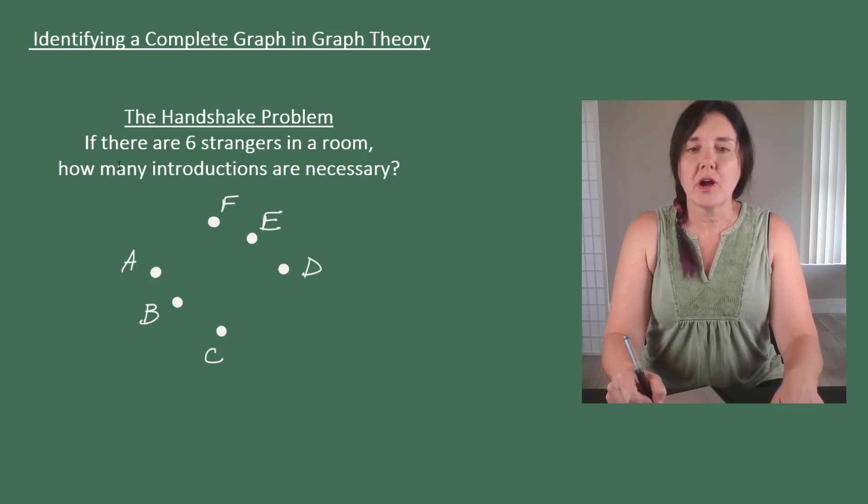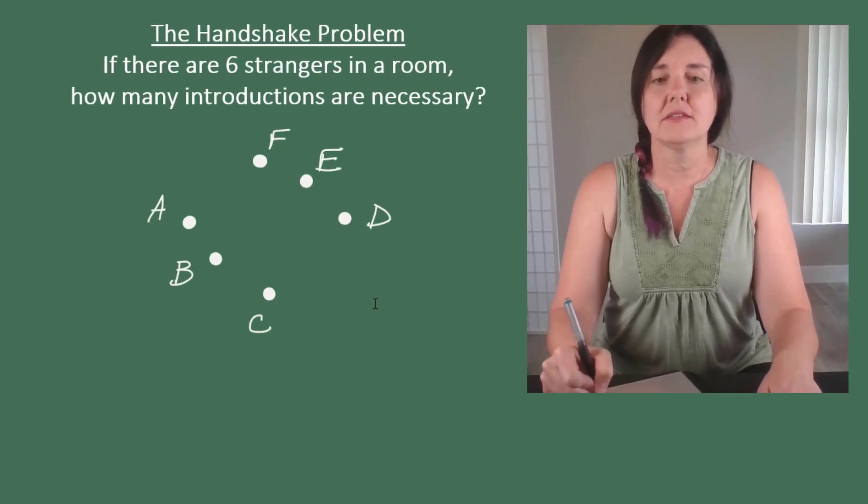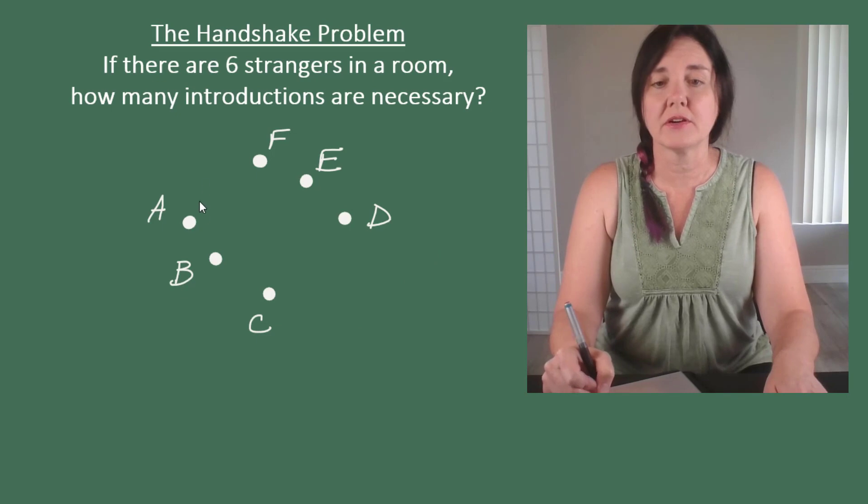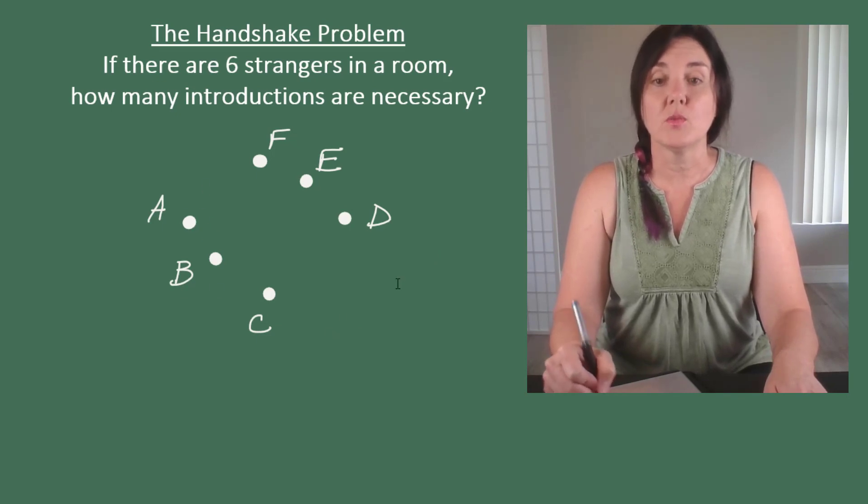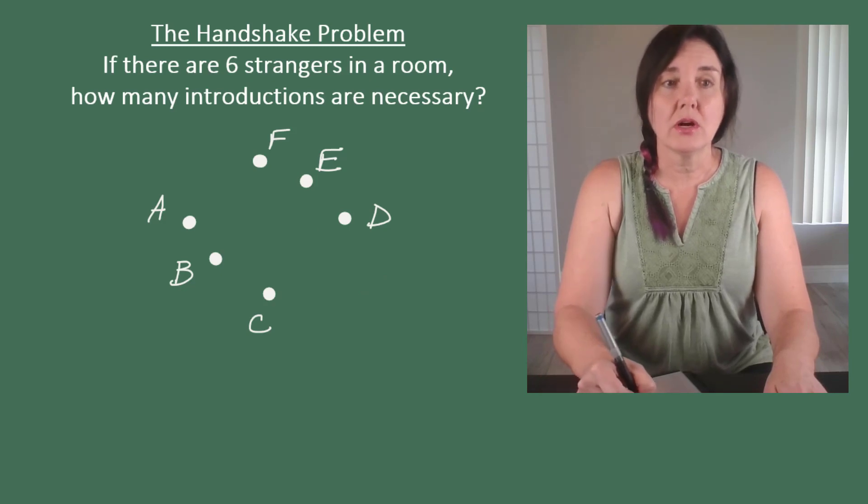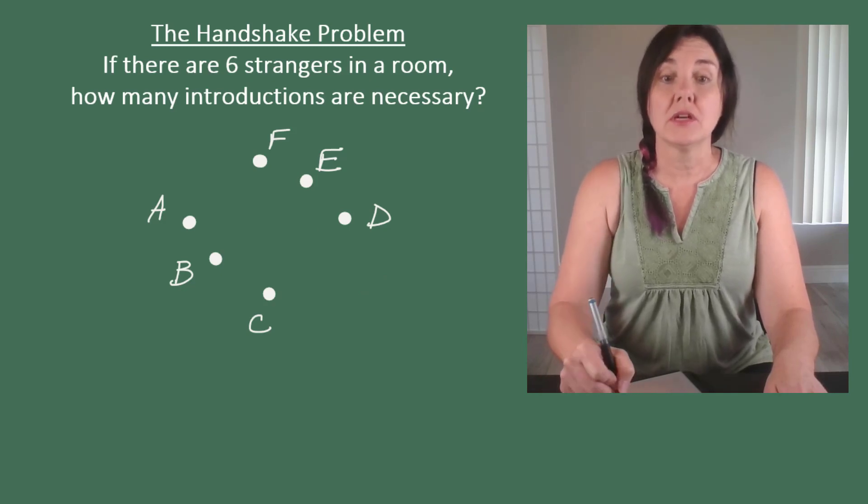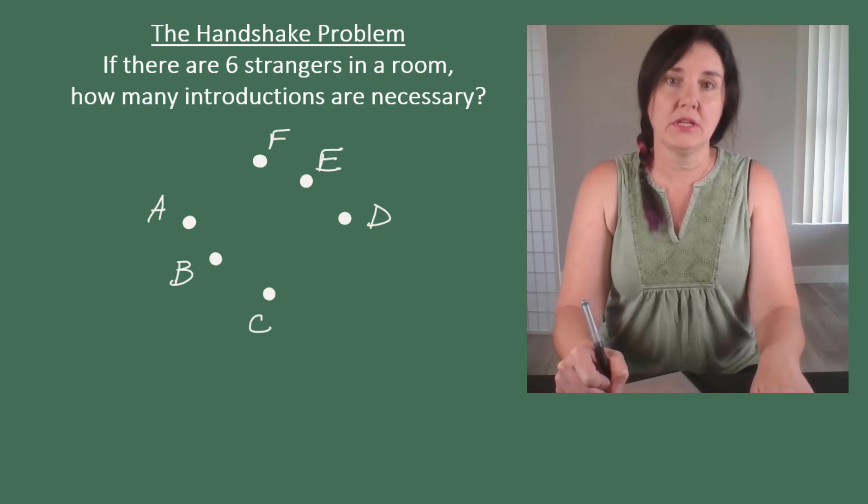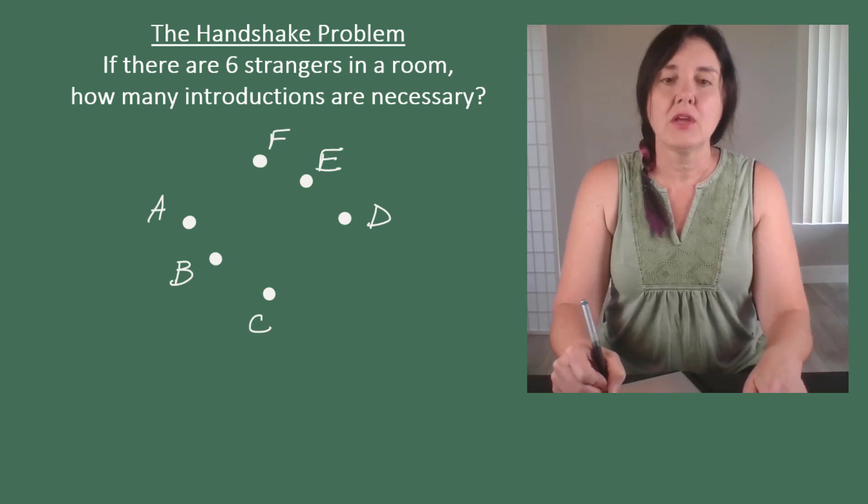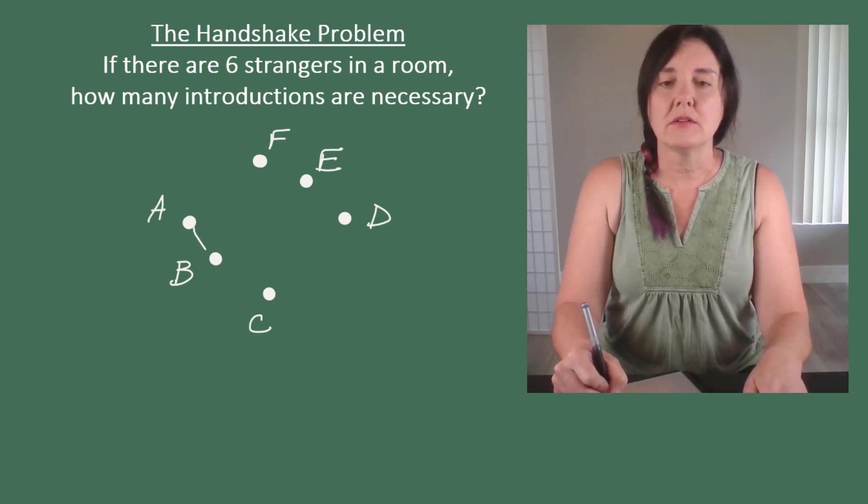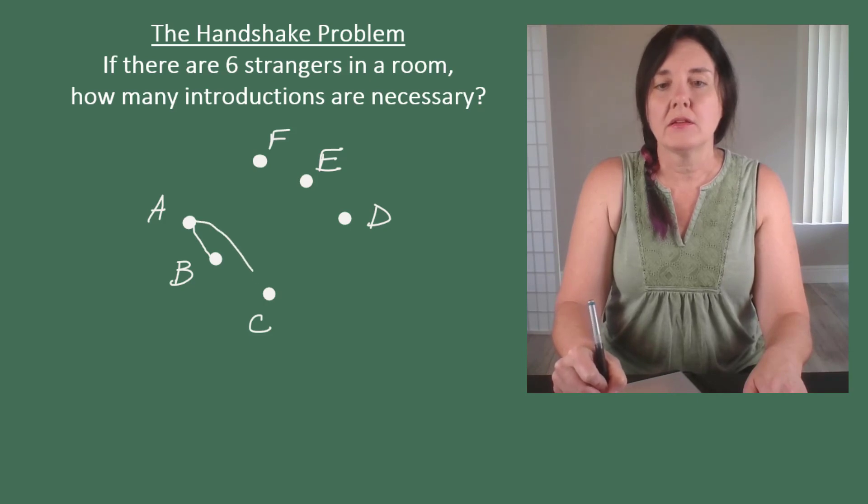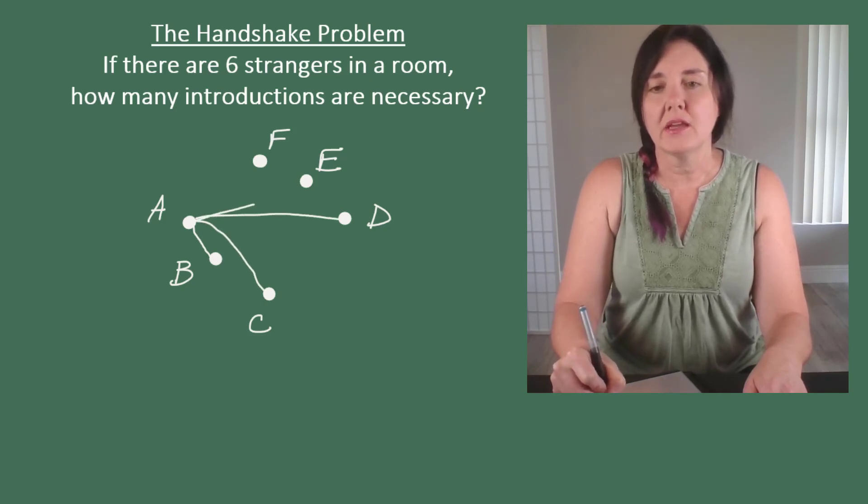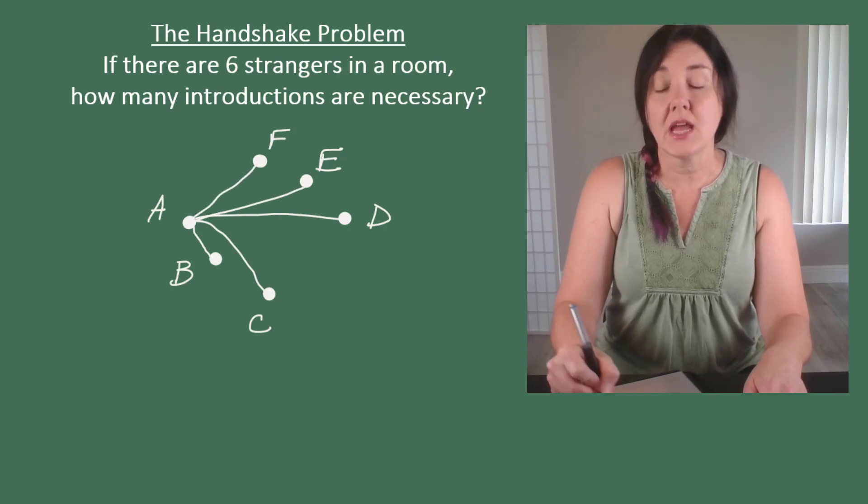So the way we're going to approach this problem is I have six dots. These are going to be vertices in our graph, and each one represents one of the people in the room. And we're going to start by counting how many introductions person A has to be participating in. So we know that person A has to meet person B and person C and person D and person E and person F.